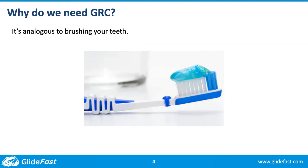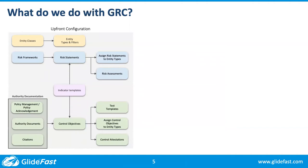When we talk about GRC in the enterprise, it's the idea of making sure we're looking at things in the system which present risk or are required to be maintained compliant — servers, VPs, departments, applications. Frankly, anything can be part of GRC. When we configure GRC, we start with upfront configuration, and when it comes to implementing GRC, this is 90% of the project.